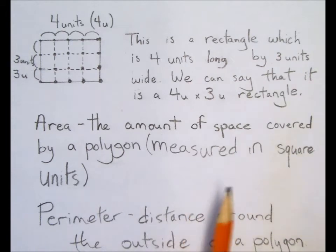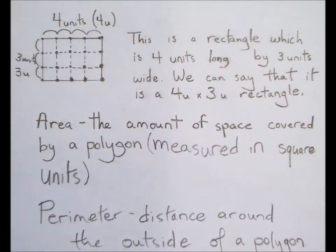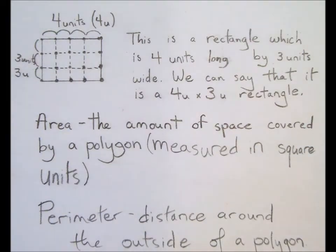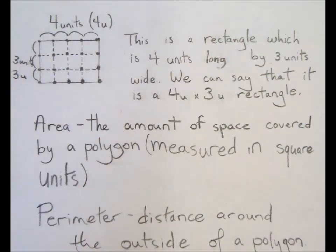So, this is a rectangle which is 4 units long. So, 1 unit, 2 unit, 3 unit, 4 units. And it's by 3 units wide. 1, 2, 3 units wide. We can say that this is a 4 by 3 rectangle.